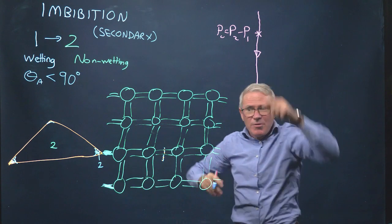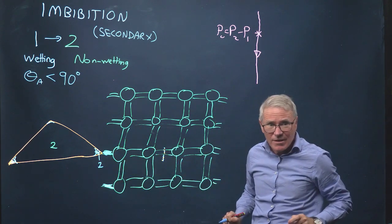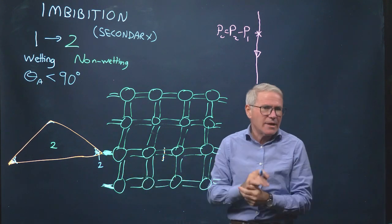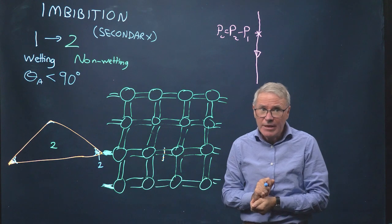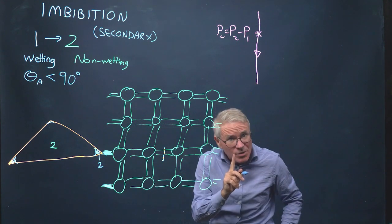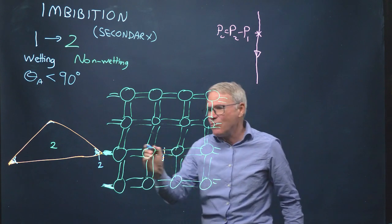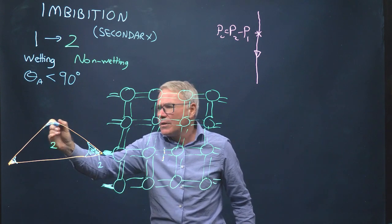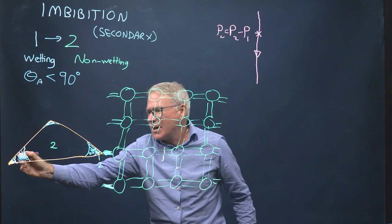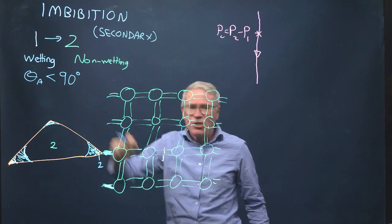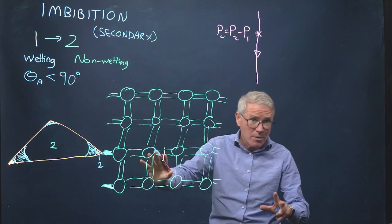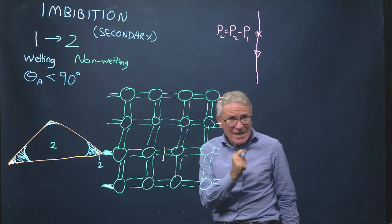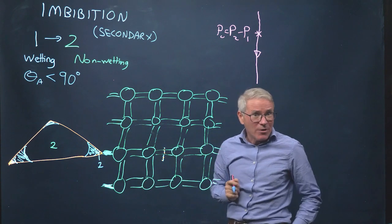I begin to drop the capillary pressure. I might fill a few narrow throats at the inlet. But as I drop the capillary pressure, we see the reverse process of what we had in primary drainage: the wetting phase moves out from the corners. This is possible if there's a strong wettability change and phase 1 is no longer wetting, but we're assuming that phase 1 is remaining the wetting phase, even when we're looking at advancing angles. So these layers swell.